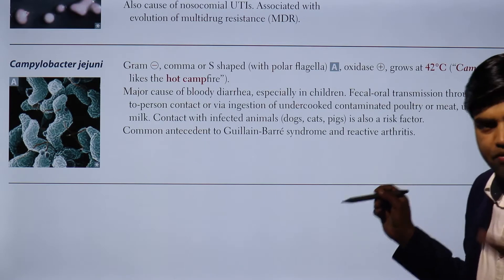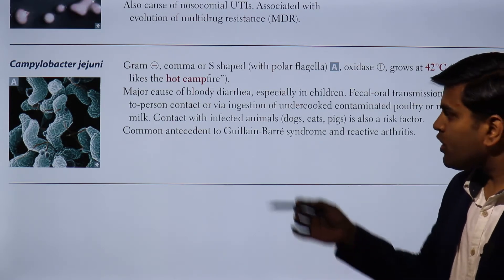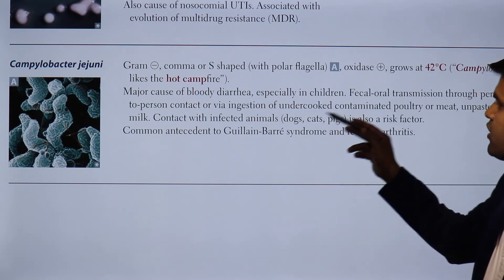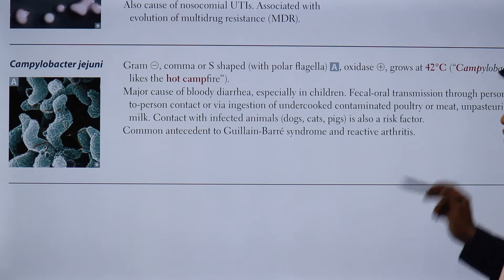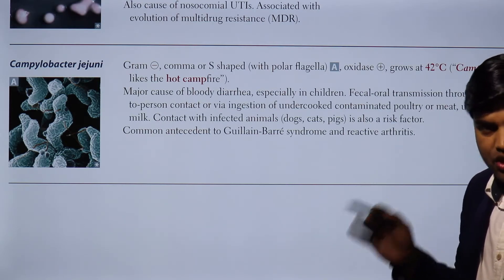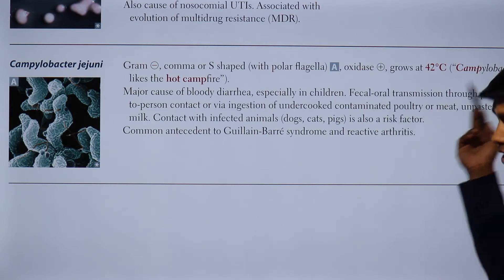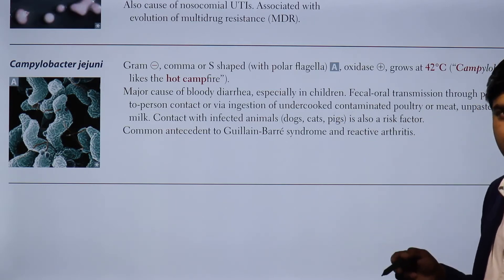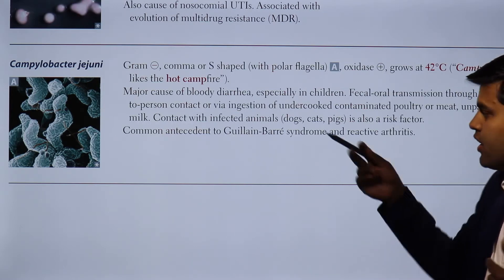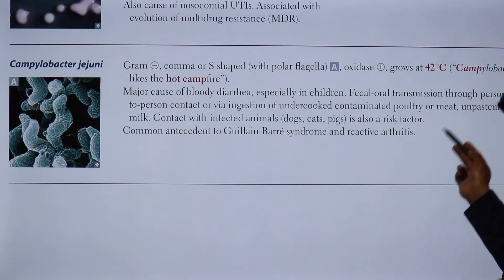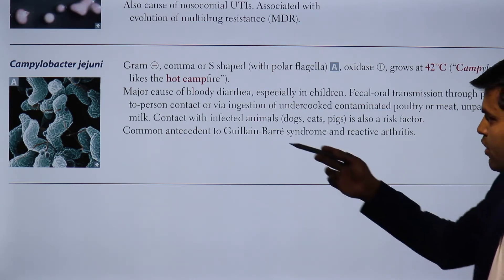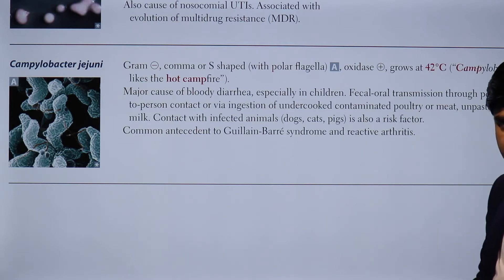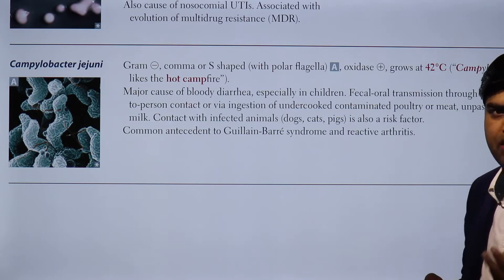Campylobacter jejuni is a major cause of bloody diarrhea, especially in children. Transmission is fecal-oral, through person-to-person contact or via ingestion of undercooked contaminated poultry or meat, and unpasteurized milk. Contact with infected animals — such as dogs, cats, and pigs — is also a risk factor.